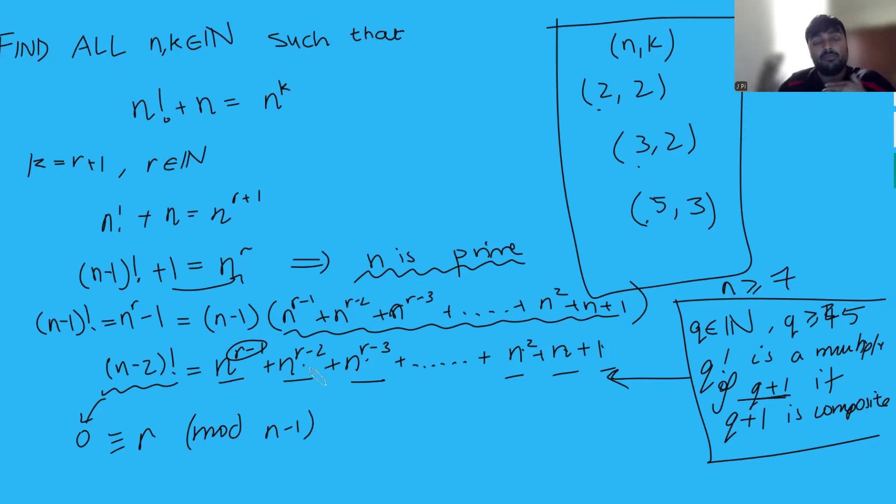In particular, this means that r is just a multiple of n minus 1. But if it's a multiple of n minus 1 and positive, we can say with confidence that r must be at least n minus 1. But this leads to a contradiction. How can r be bigger than n minus 1? It can't. Let's think back to this equation up here, where we had n minus 2 factorial. So, if we look at the right-hand side here, we've got n to the r minus 1 plus n to the r minus 2, and so on. So, we've got n minus 2 factorial here is equal to this. In particular, it's bigger than n to the r minus 1. But if r is at least n minus 1, we can say that this is at least n to the n minus 1 minus 1, which is equal to n to the n minus 2, and that's obviously bigger than n minus 2 to the n minus 2.